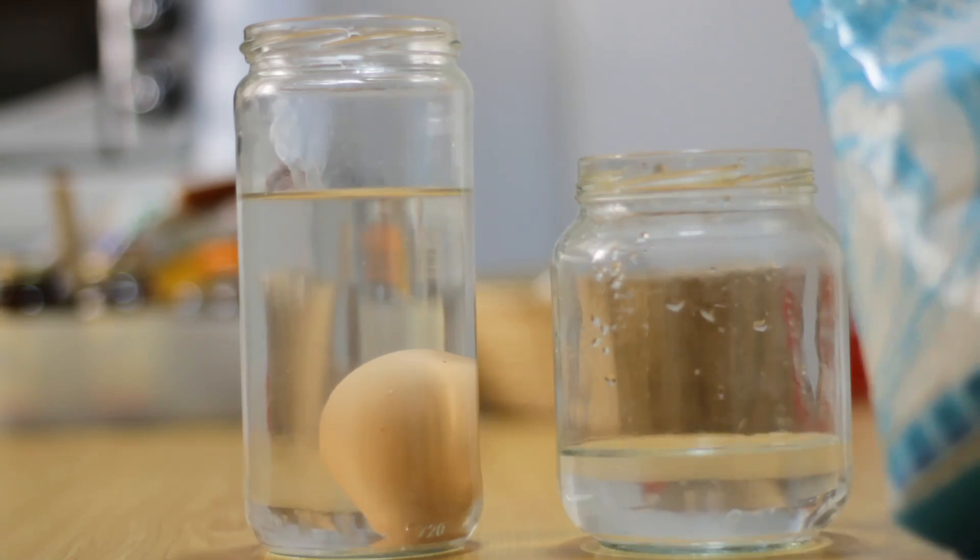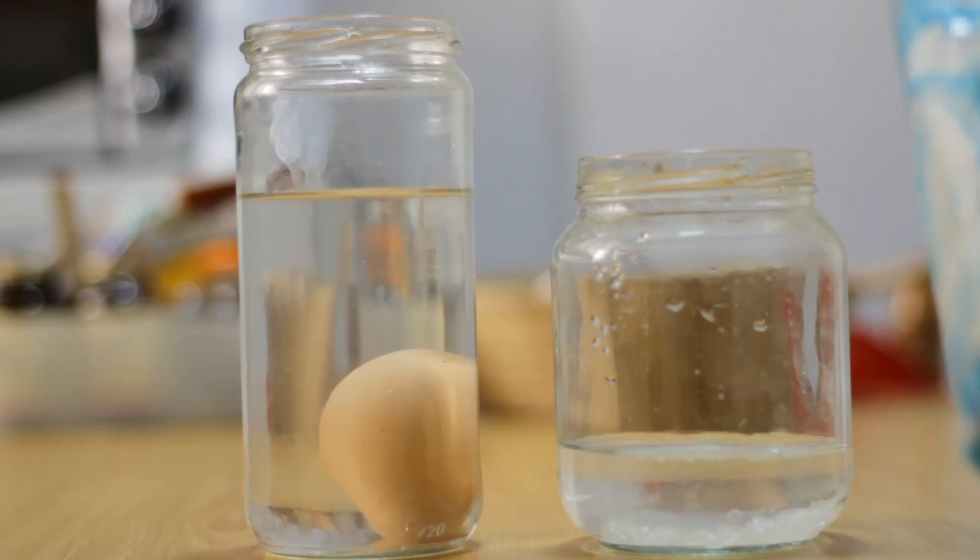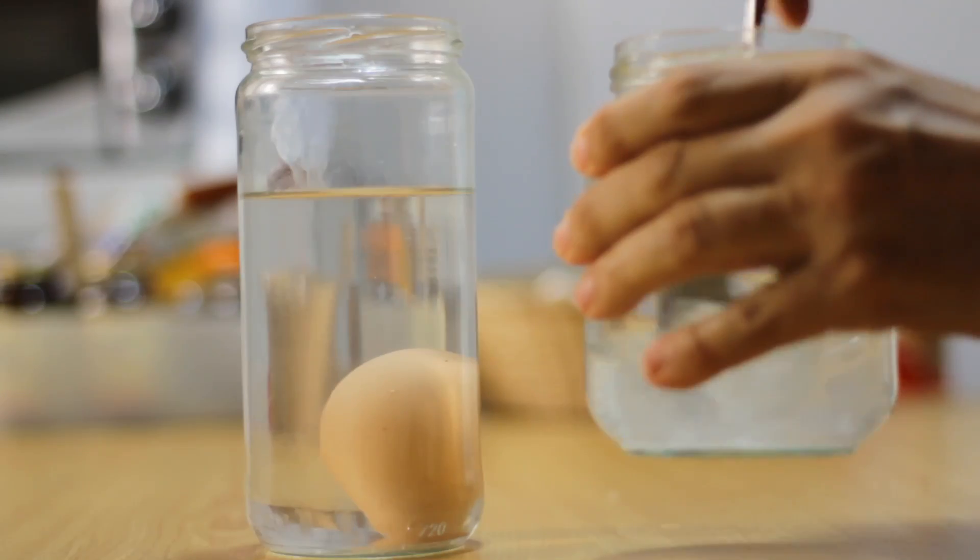An egg is from 5 to 10% denser than water, so it sinks in fresh water.